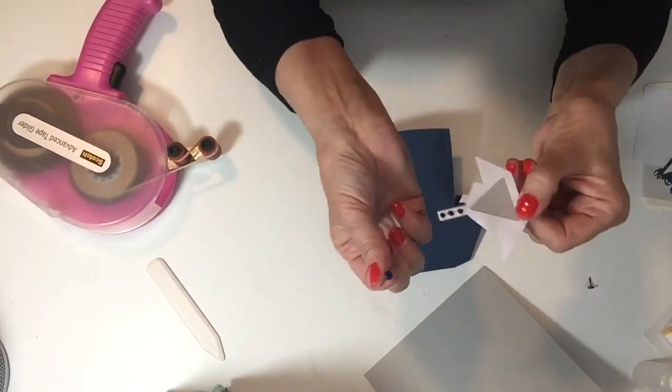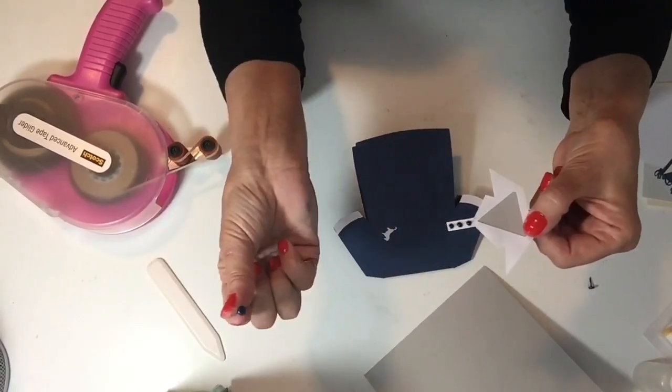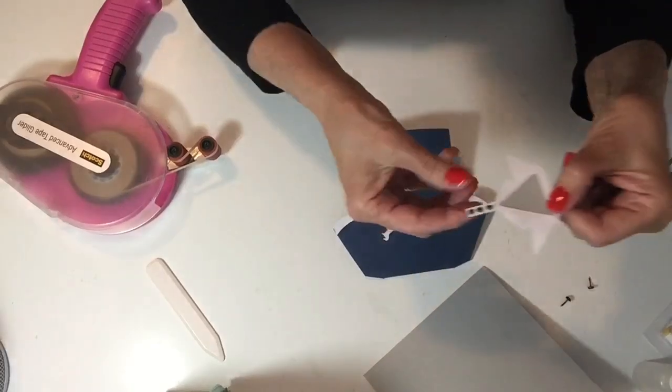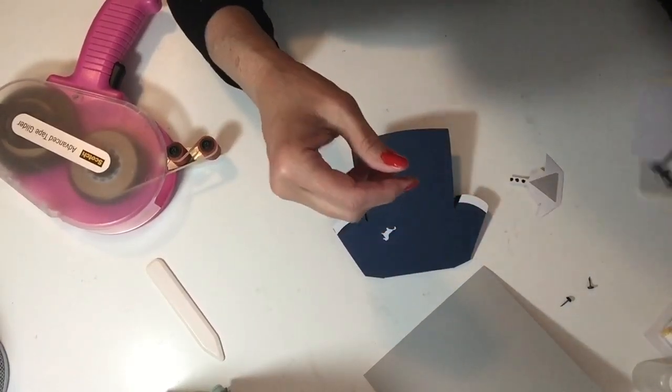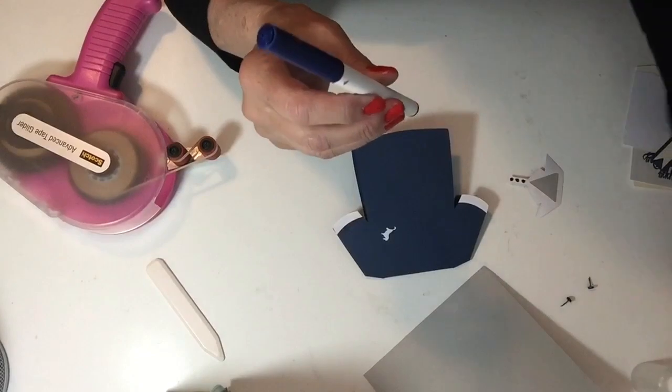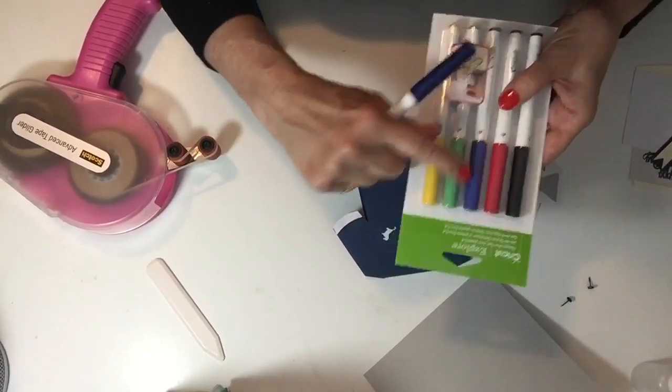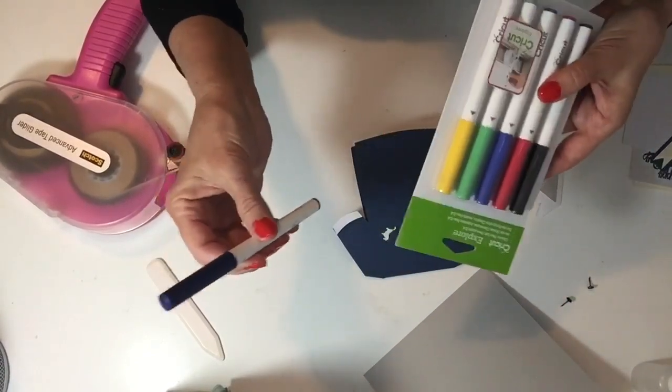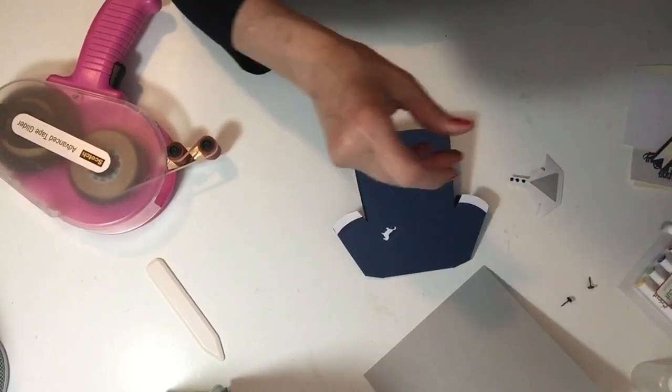Also, I wanted to use brads for buttons but my brads weren't tiny enough, so I ended up using a blue pen. This is from the southwest set and there's also one in the classic set, the Cricut set.